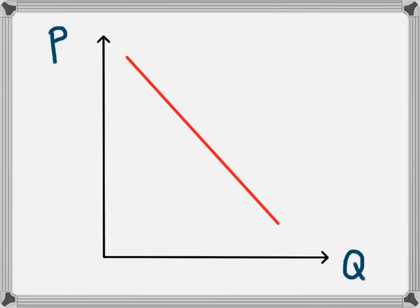This video is going to explain the kinked demand curve that we'll see in an oligopoly. Generally for a business, this would be their demand curve, a downward sloping demand curve that shows that as the price falls, the quantity demanded increases.